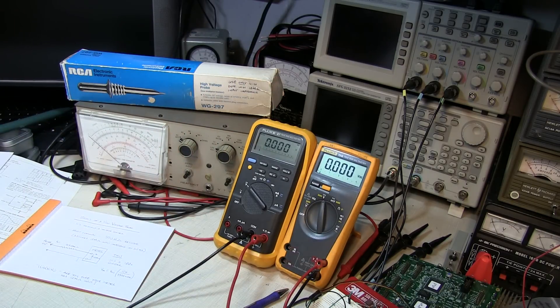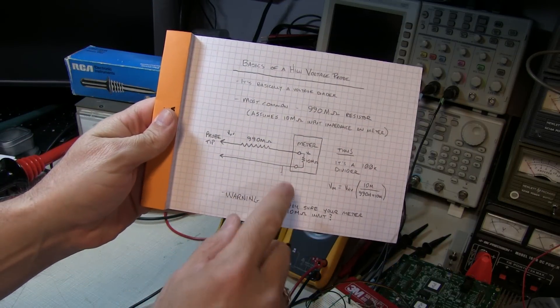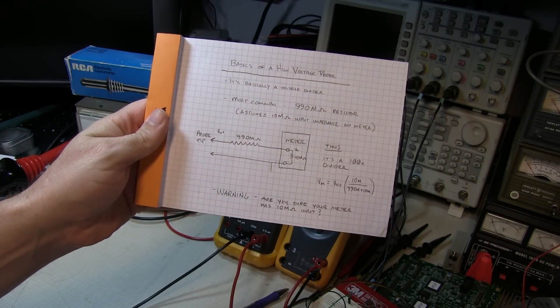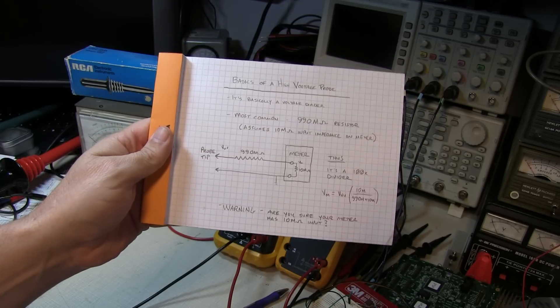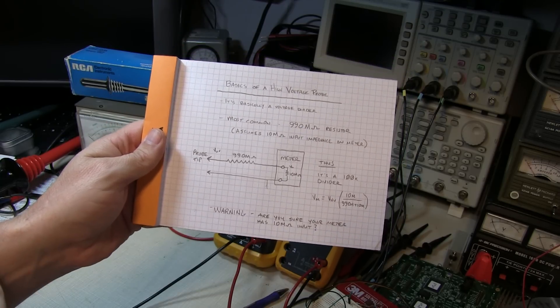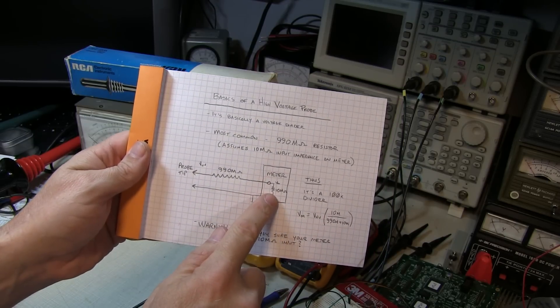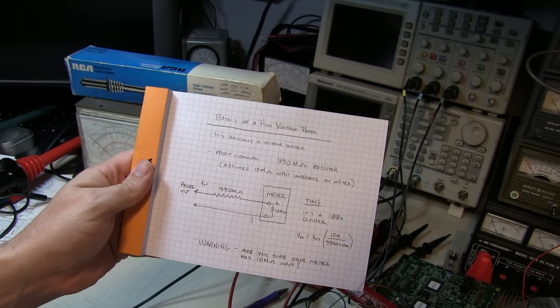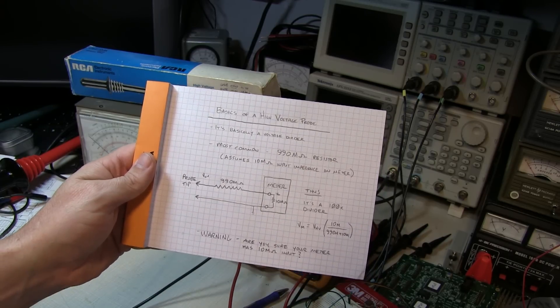Now one other thing we mentioned is that these probes generally assume that we've got a 10 megaohm input impedance on the meter. And that's kind of a general assumption that we all make about our meters. But you really have to be careful because that's not always true. And even in the same meter, on some ranges it might be 10 megaohms and some it's not. Let's take a look at some of the meters I have here and see what they show.